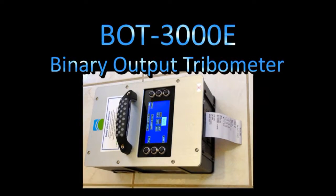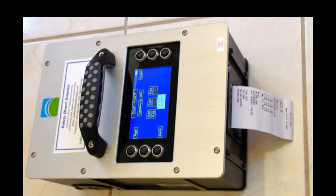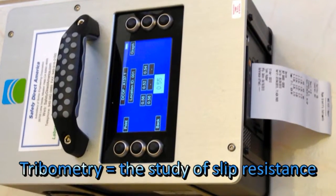The BOT3000E Floor Slip Resistance Tester is the latest and most relevant technology in tribometry, or the study of floor slip resistance.